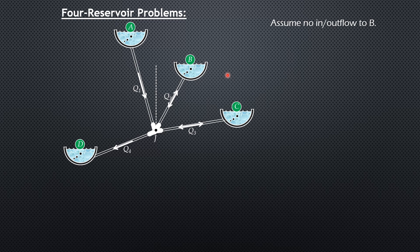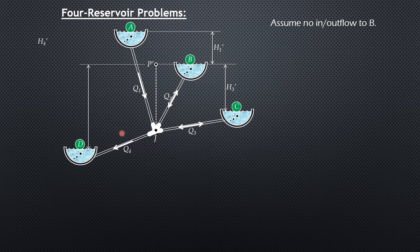First, we assume there is no inflow or outflow to B, just like before. The piezometric level P' will be at the same level as B, so only three reservoirs operate for this case. We are sure that q1 is towards the junction and q4 is towards D, so q3 will have a questionable direction. We can then compute the head losses h1', h3', and h4' when the piezometric level is at the same level as B.